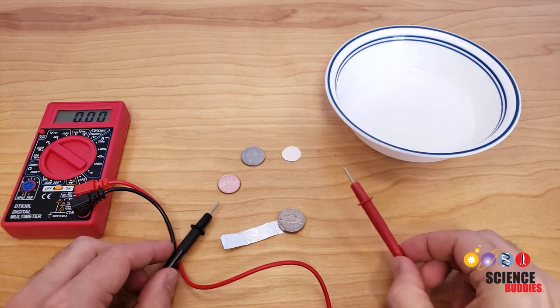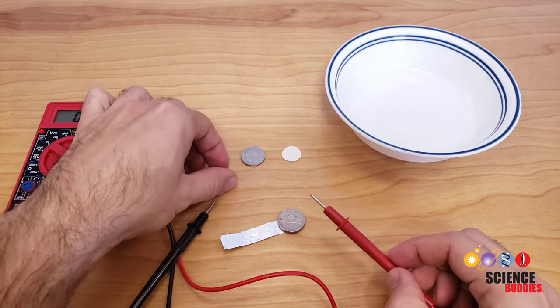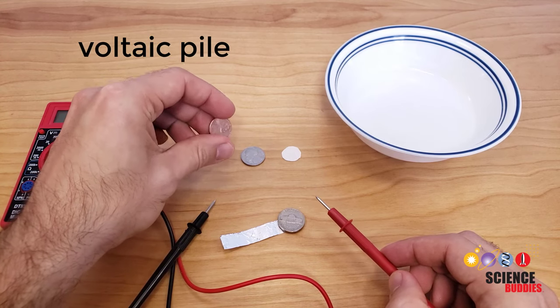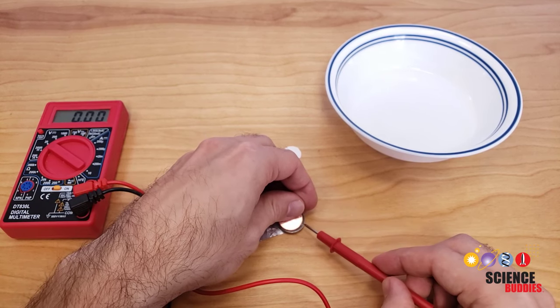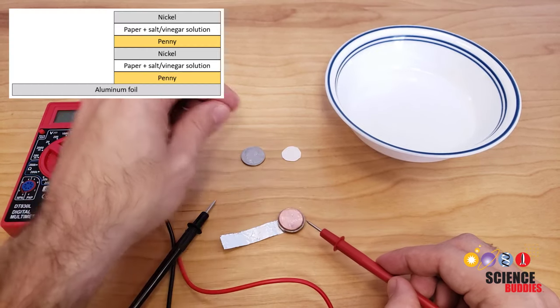Once you get your first cell working, you can build a second one by piling another one on top of it. This is where it gets the name Voltaic Pile. So, take a penny and place it on top of the first nickel. This does not get a paper layer in between the nickel and the penny.